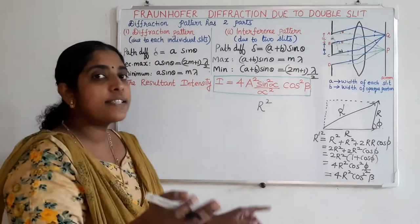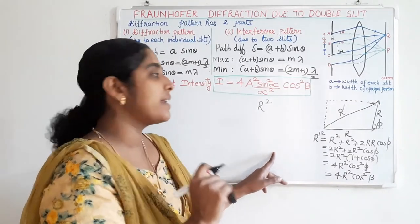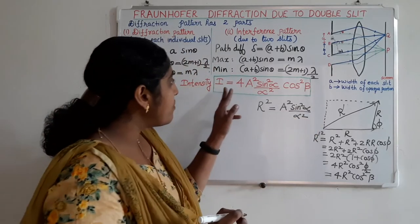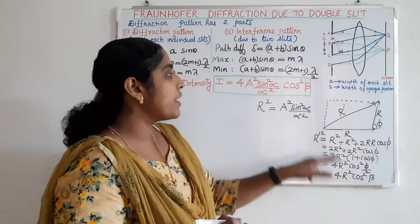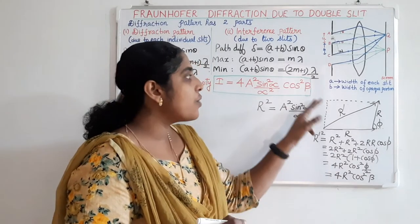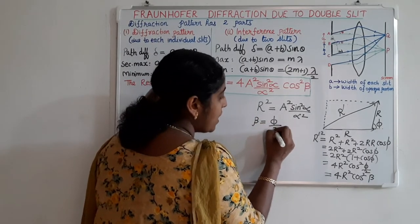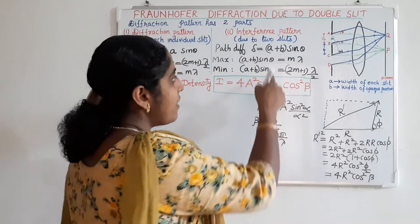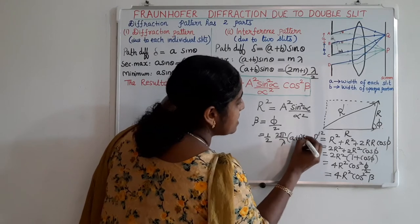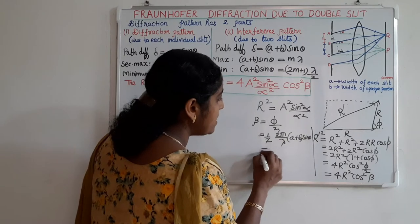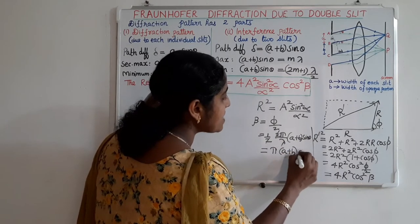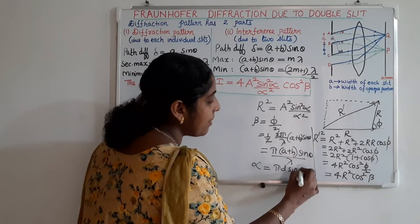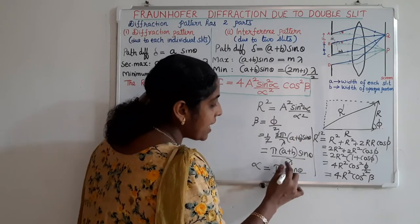R² is the intensity due to diffraction at a single slit, which equals A² sin²(alpha) / alpha². So the final intensity is 4 times A² sin²(alpha) / alpha² times cos²(beta). Here beta equals phi/2, where phi is the phase difference. Phase difference is (2π/lambda) times path difference, and path difference is (A + B) sin theta. So beta equals π(A + B) sin theta / lambda. Alpha, from the single slit, is π A sin theta / lambda.